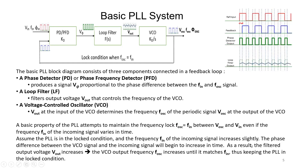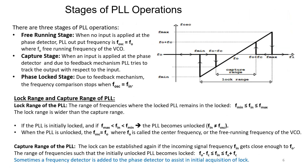If the PLL is in the locked condition and f_in increases slightly, the phase difference between the VCO signal and the incoming signal begins to increase. As a result, the filtered output voltage v_out increases, which increases f_osc — a feedback mechanism to maintain the lock condition f_osc equal to f_in.